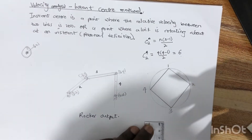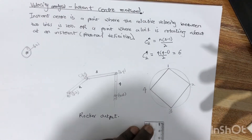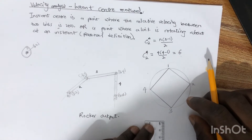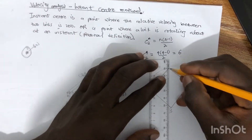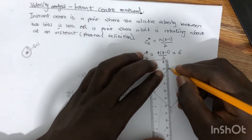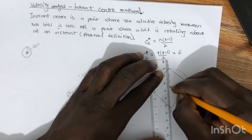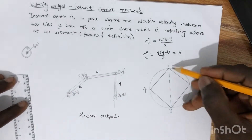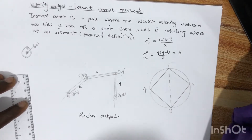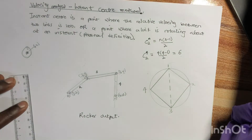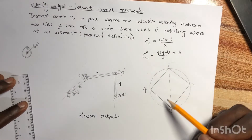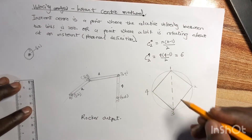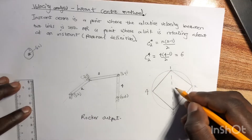To make sure we don't lose track — especially when looking for up to 15 instant centers — ensure each node is connected to all other links systematically. Let's look for instant center 1-3 first, marking it with short dashes on the circle track.